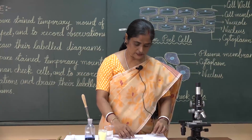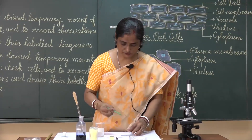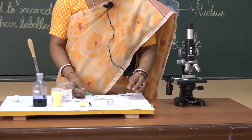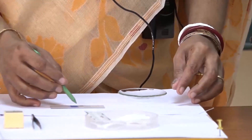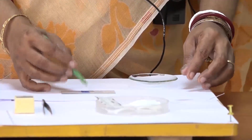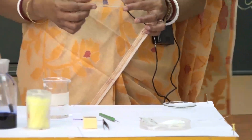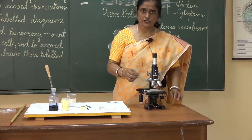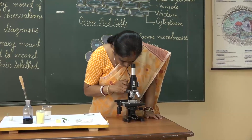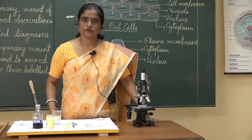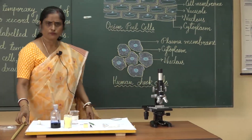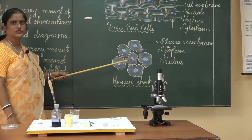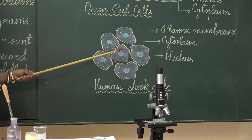Now immediately put the cover slip with the help of the needle. Gently place the cover slip over the material, tap from the back of the needle, and press it gently. Observe under the microscope. First under low power, then under high power. What do you see? We see such cells under the microscope — somewhat irregular in shape and placed close to each other.